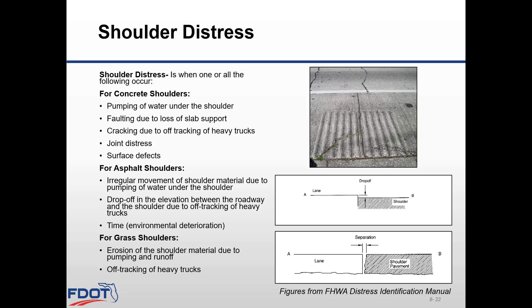Shoulder distress includes one or all of the following. For concrete shoulders: pumping of water under the shoulder, faulting due to loss of slab support, cracking due to off-tracking of heavy trucks, joint distress, and surface effects. For asphalt shoulders: irregular movement of shoulder material due to pumping, a drop-off in elevation between the roadway and shoulder due to off-tracking of heavy trucks, and environmental deterioration over time. For grass shoulders: erosion of shoulder material due to pumping, runoff, and off-tracking of heavy trucks. Severity is not measured in the field but is noted in the survey.